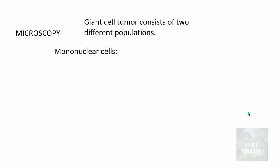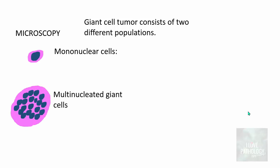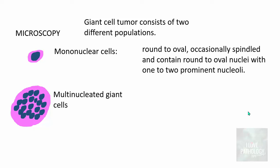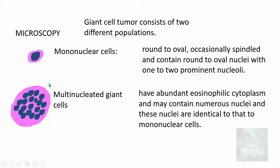Microscopically, Giant cell tumor is very characteristic — it has two different populations: one, the mononuclear cells, and two, the multi-nucleated Giant cells. The mononuclear cells are the neoplastic cells — they are round to oval, occasionally spindle-shaped, and contain round to oval nuclei with one or two prominent nucleoli. The multi-nucleated Giant cells have abundant eosinophilic cytoplasm and contain multiple — numerous — nuclei, resembling osteoclast-type Giant cells. Importantly, the nuclei of the multi-nucleated Giant cells are identical to those of the mononuclear cells, and the multi-nucleated Giant cells are not the neoplastic cells.